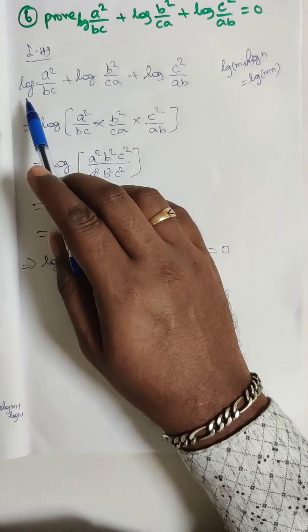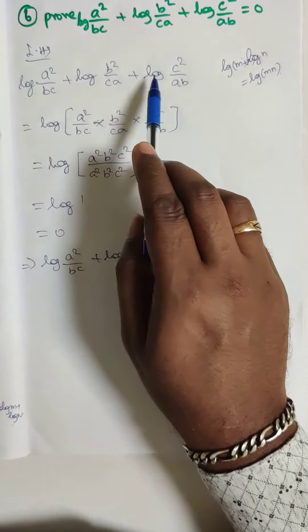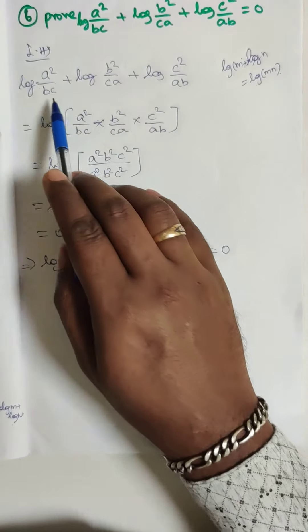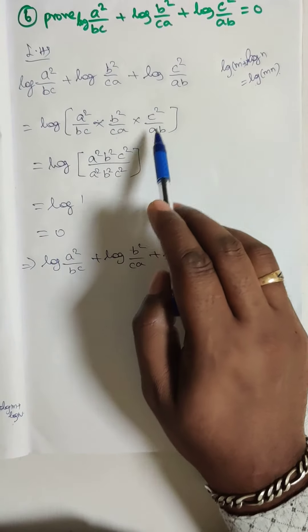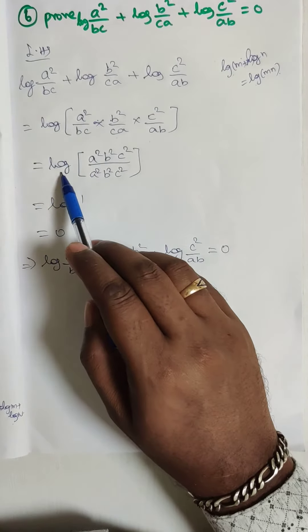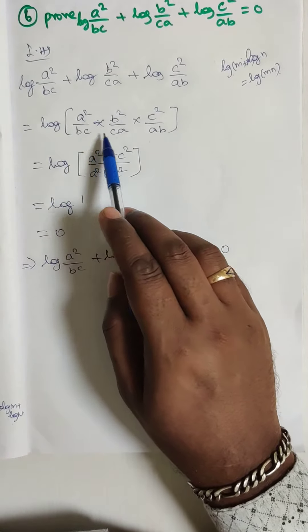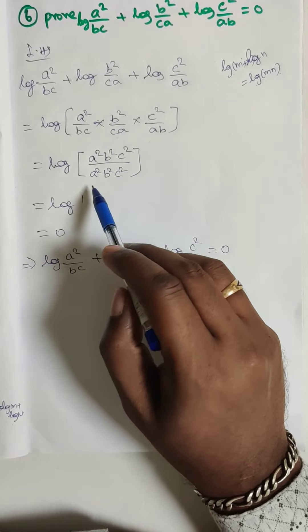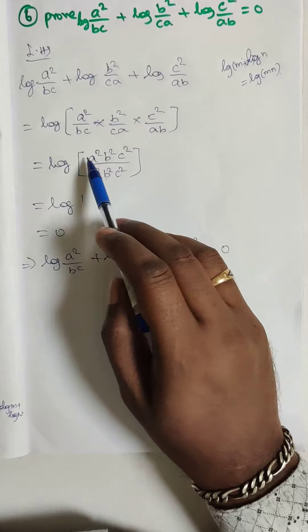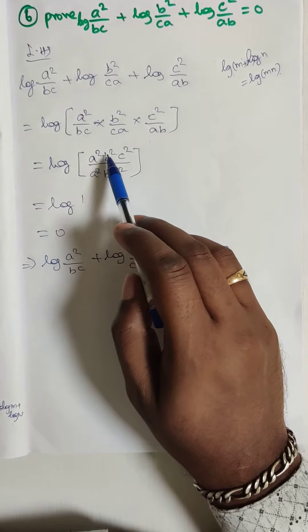So log m plus log n is log m into n. So here log of a square by bc into b square by ca into c square by ab. So now log of here a square b square c square. In the denominator we have a square b square c square, numerator we have to multiply a square b square c square.